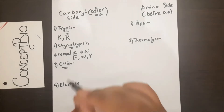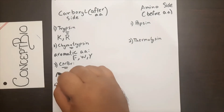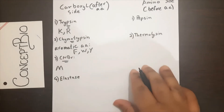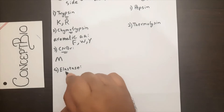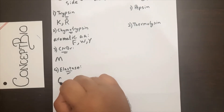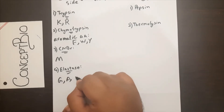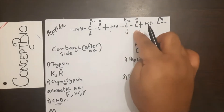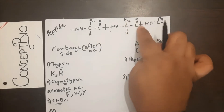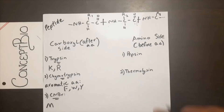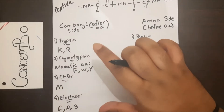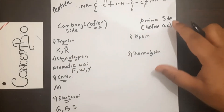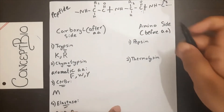Cyanogen bromide is not a proteolytic enzyme but a chemical agent. It will only cleave if the R2 amino acid is methionine, cleaving on the carboxyl side. Finally, elastase is a proteolytic enzyme that cleaves only glycine, alanine, or serine — it cleaves only on the carboxyl side, forming two different groups. These are the major carboxyl-side attacking proteolytic enzymes.